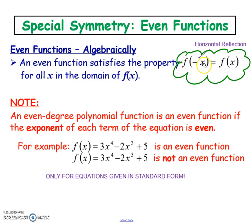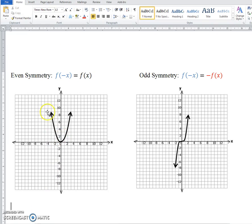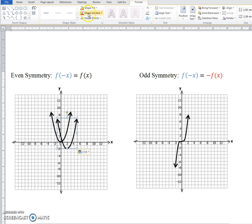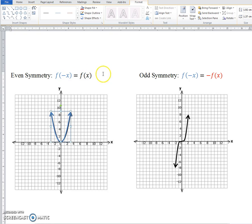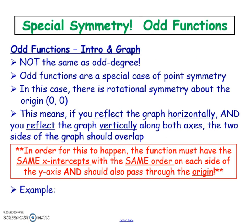Even symmetry is when you graph your original function, then copy and reflect it horizontally over the y-axis, and the copy and the original overlap each other. Graphically, here is an even degree function — we have to prove it works. I copy and paste it in blue, reflect it horizontally, and notice that they overlap. Since they overlap, they're equal, meaning this even degree function has even symmetry.